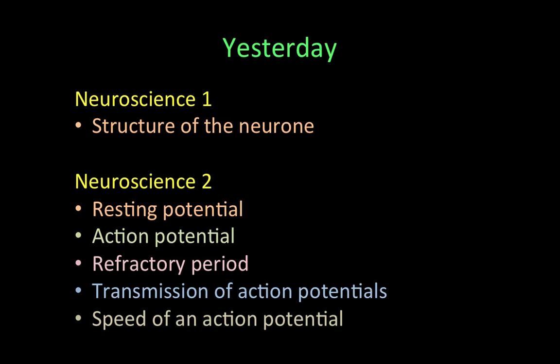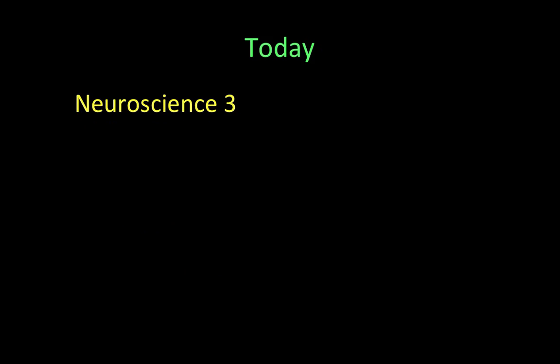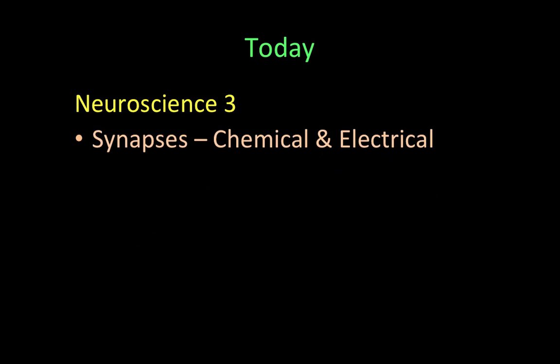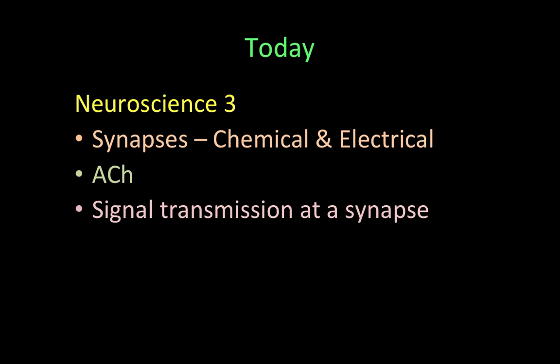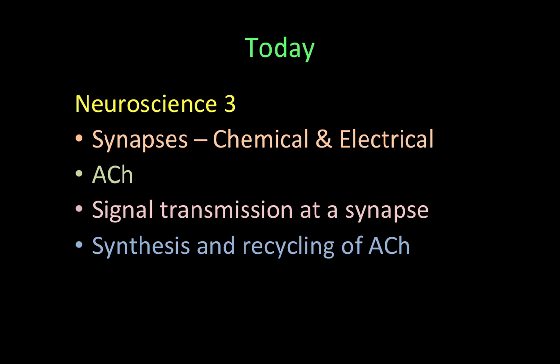I would strongly recommend, before going to Neuroscience 3, which is today's class, you visit the YouTube channel and look at Neuroscience 1 and Neuroscience 2. In today's class we're going to be looking at synapses generally — chemical and electrical — then focusing on acetylcholine (ACh), signal transmission at a synapse, synthesis and recycling of acetylcholine, acetylcholine receptors, and certain toxins that affect the cholinergic synapse.